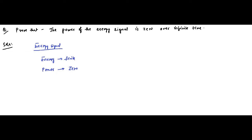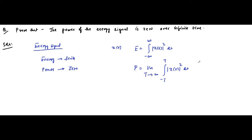We know that for a signal x(t), energy is given by the integral from -∞ to +∞ of x(t)² dt, and power is equal to limit T tends to infinity of (1/2T) times the integral from -T to T of x(t)² dt. Note: I missed the 1/2T factor earlier — it should be limit T tends to infinity, 1/2T, integral from -T to T of x(t)² dt.